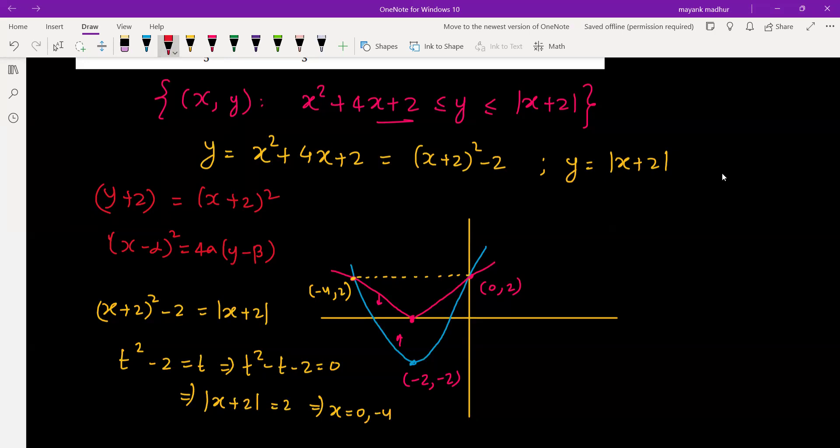Now using properties of parabola for the area part. This area will be two-thirds of the area of a rectangle. The rectangle area is base times height, length times breadth. So it will be 2 from here and 4 from here, which is 2 × 4. That is the area of this part.